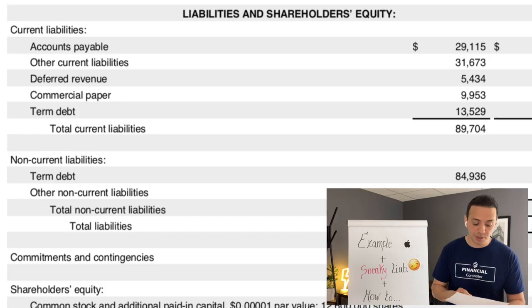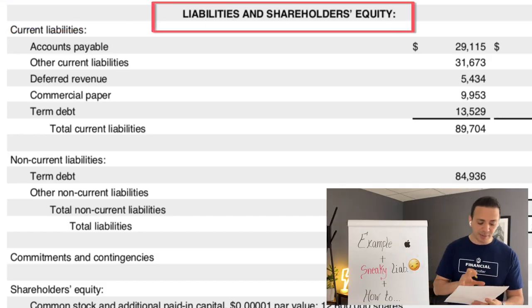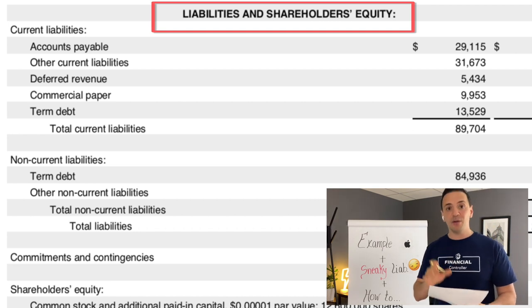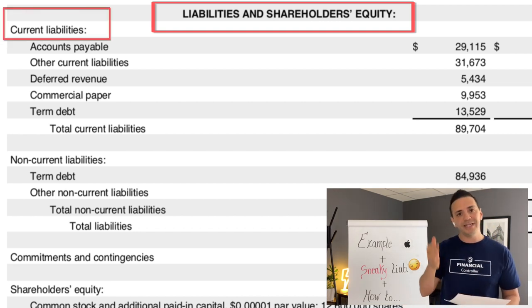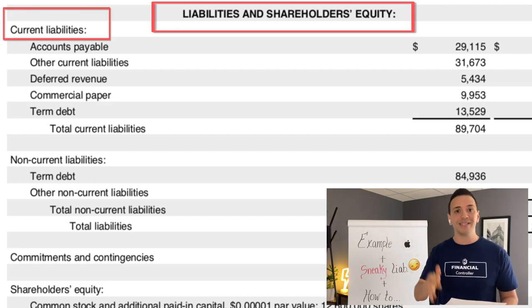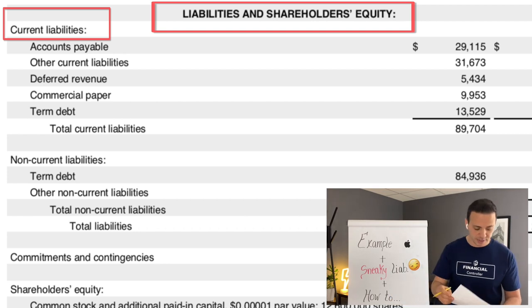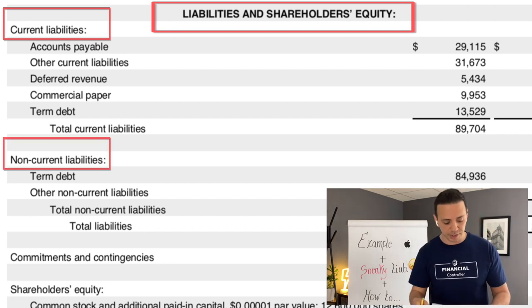Now let's look at liabilities and shareholders' equity. The same idea applies: liabilities are broken down between current and non-current. Current liabilities are those that will materialize within 12 months, and non-current liabilities are longer than 12 months.